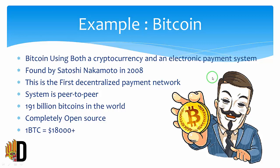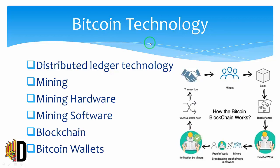Now we talk about an example of cryptocurrency — I am going to talk about Bitcoin. Bitcoin is used as both a cryptocurrency and an electronic payment system. It was founded by Satoshi Nakamoto in 2008. This is the first decentralized payment network, using a peer-to-peer system. It is completely open source. One Bitcoin is equal to 80,000 plus dollars.